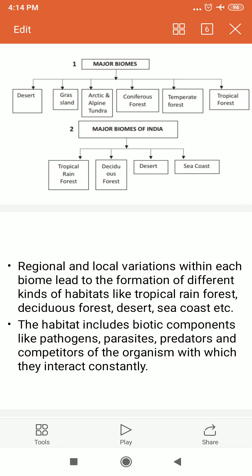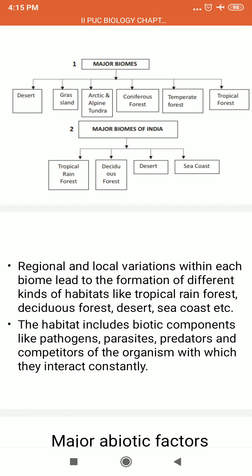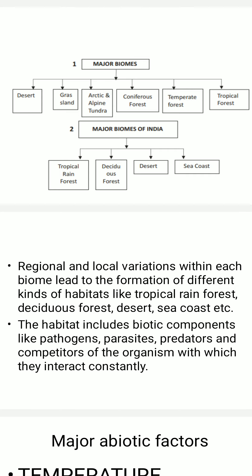Some are endophytes, like blue-green algae Nostoc, living within the cortex of some plant roots in symbiotic association. The habitat includes biotic components like pathogenic disease-causing organisms, parasites living on organisms like lice or blood-sucking types, or inside organisms like pathogenic microorganisms, for example Platyhelminthes liver fluke, and also predators and competitors with which organisms constantly interact.